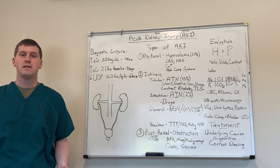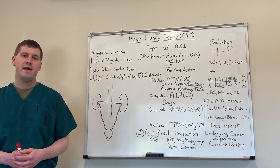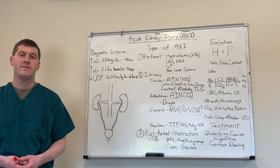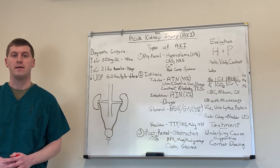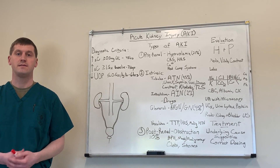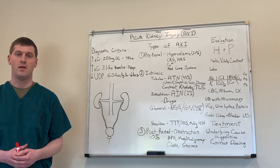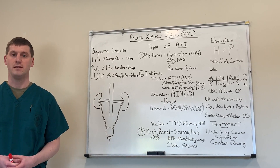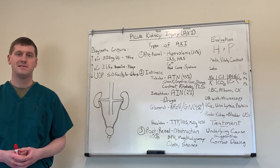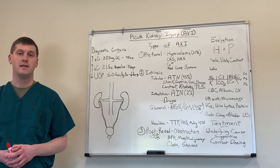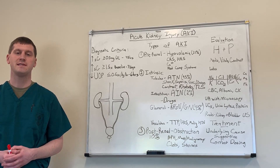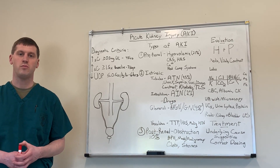Why is an acute kidney injury an important diagnosis to have? In the hospitalized setting, patients who develop these end up having a higher morbidity and mortality. They also have a higher incidence of developing chronic kidney disease later in life after an episode of acute kidney injury. Anywhere from about 20 to 25 percent of patients will develop an acute kidney injury during a hospital stay, and that's much higher in the ICU setting — somewhere around 60 to 65 percent.